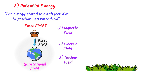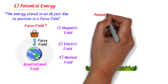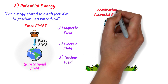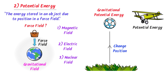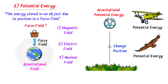Now, coming to examples of potential energy. When we raise a ball above the ground, we actually change its position in the force field, so potential energy is stored in this ball. Here the force field is the gravitational field — we can also say that gravitational potential energy is stored in this ball. Secondly, an airplane moving above the ground possesses potential energy. Thirdly, birds flying above the ground possess potential energy. Therefore, remember that potential energy is the stored energy in an object when we change its position in a force field.